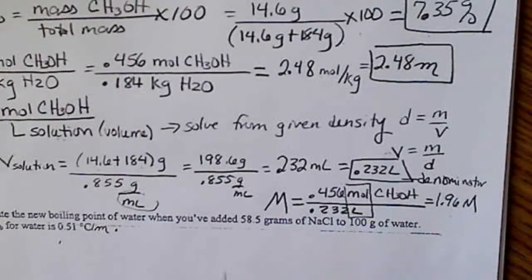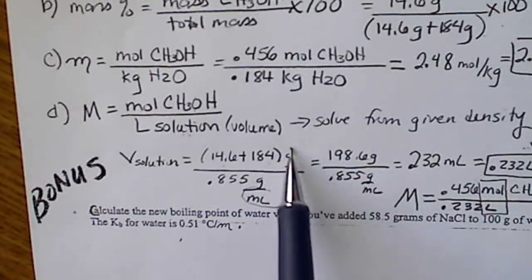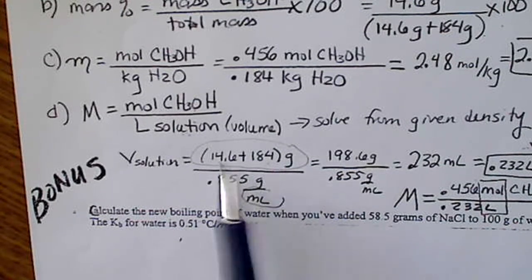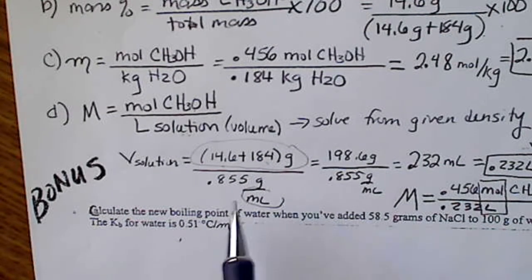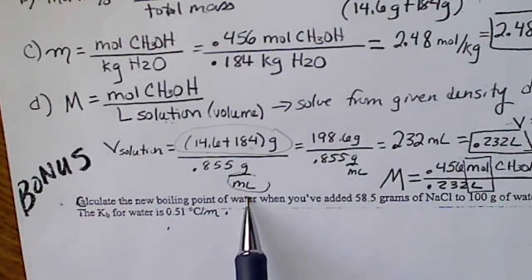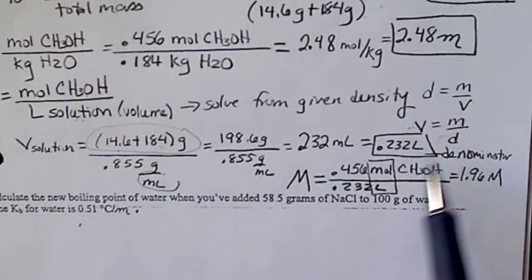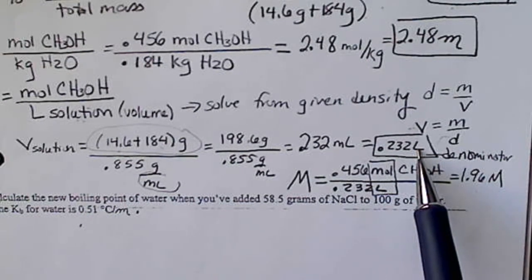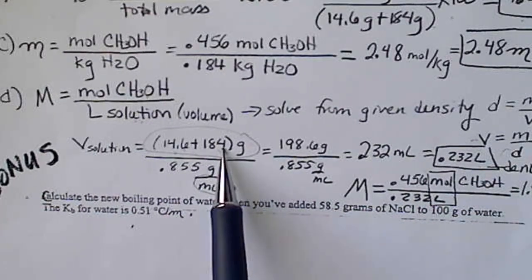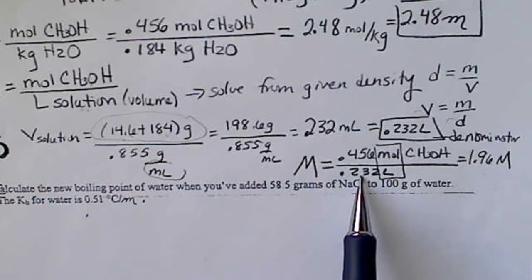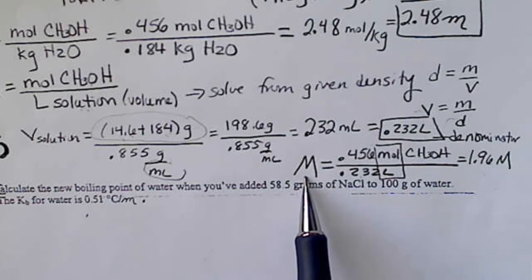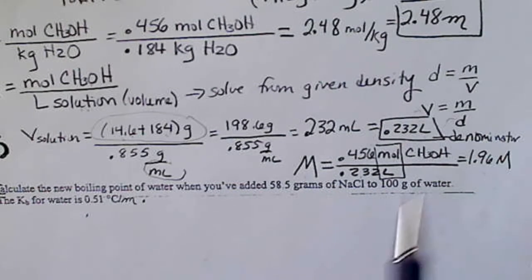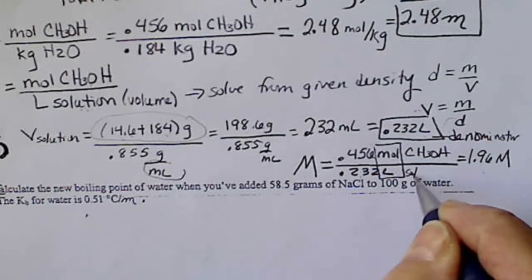The key for molarity is that density equals total mass divided by total volume, and the total mass is the sum of the solute and solvent masses given. We solve for the total volume of the solution, then convert that to liters, because molarity always has units of moles of solute divided by liters of the entire solution.